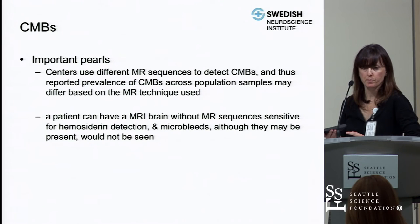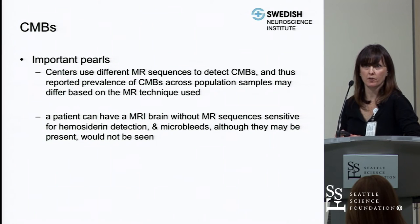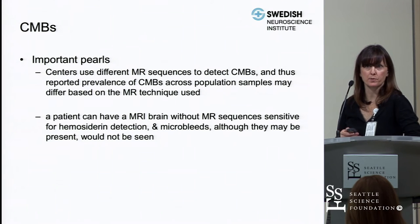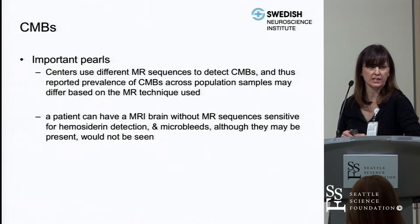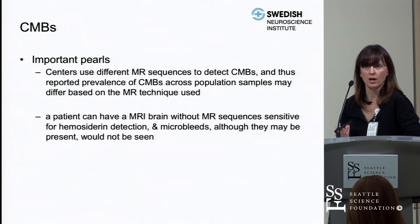If a patient has an MRI of the brain without gradient echo or susceptibility-weighted image sequences, you could miss the fact that they have microbleeds because that sequence wasn't done. We don't see these on T2 or T1 sequences.